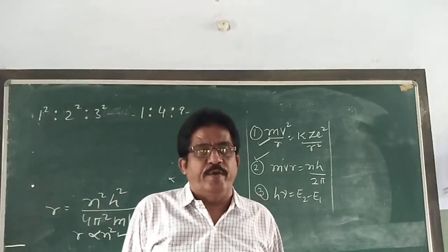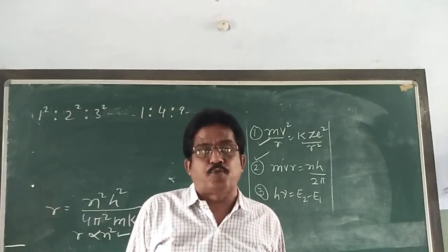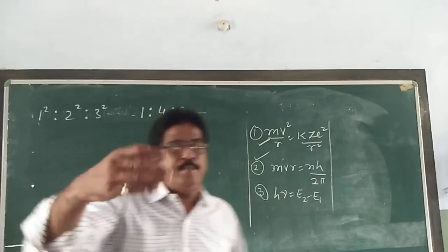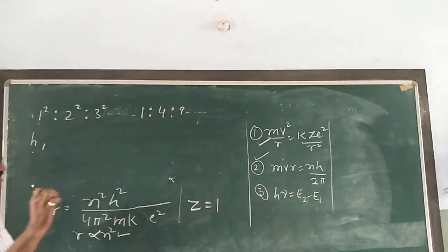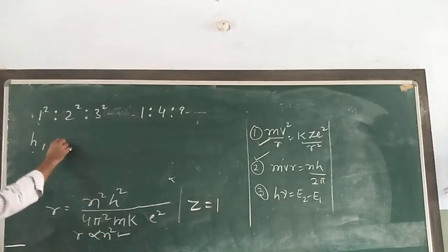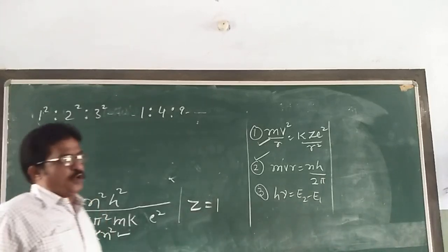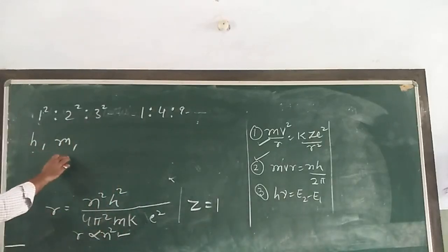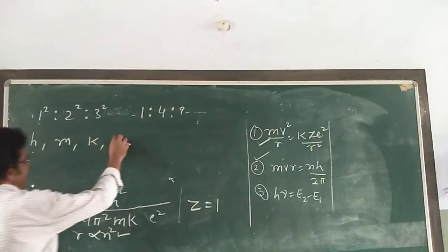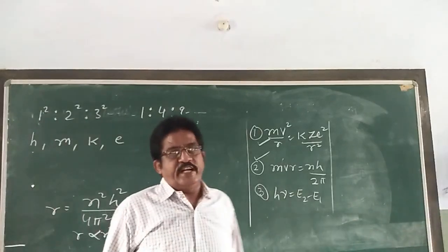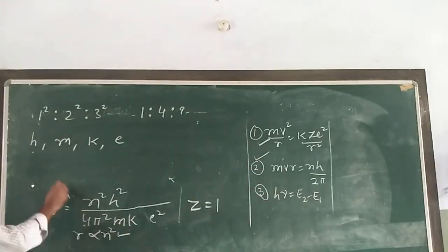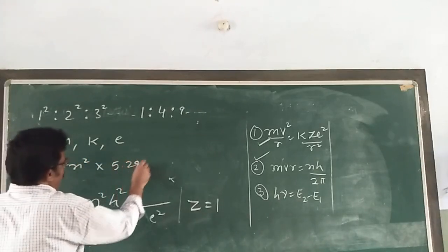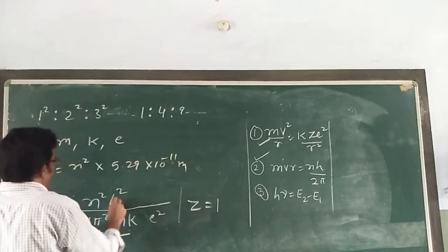These stationary orbits are not equally spaced; they are in the ratio of 1 : 4 : 9. Putting the constant values — h = 6.6×10⁻³⁴, mass of electron m = 9.1×10⁻³¹ kg, k = 9×10⁹, and e = 1.6×10⁻¹⁹ — we get r = n² × 5.29×10⁻¹¹ m.